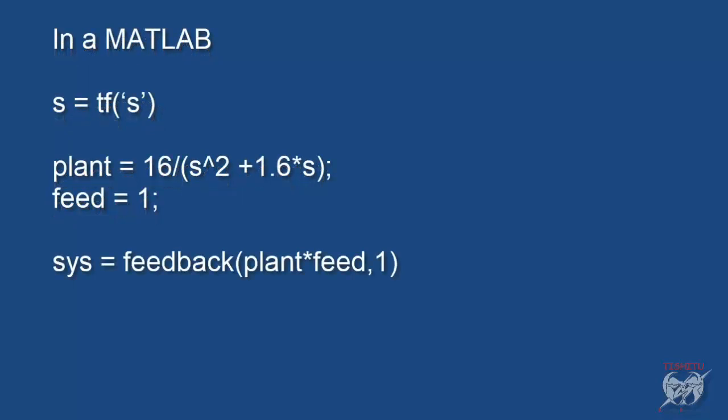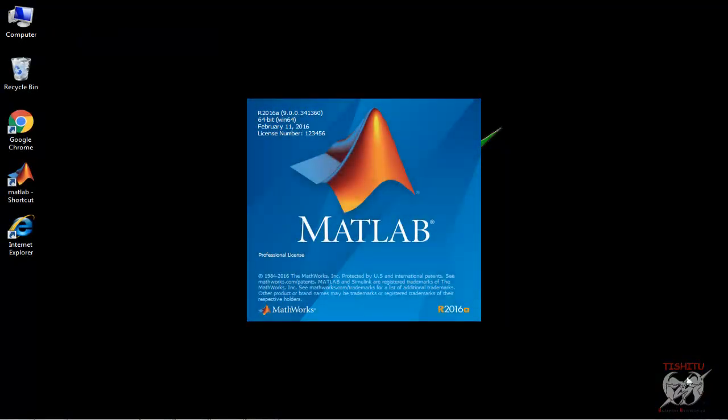Then use feedback command to evaluate transfer function of complete system in different format as compared to previous method. That is feedback in small circle bracket plant into feed comma one and assign value in sys variable. So when we run it we get value of transfer function as a value of sys variable. Now move towards MATLAB platform to perform it.